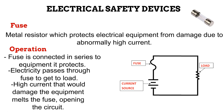Any current high enough to damage the equipment would melt the fuse. If the fuse melts, the closed circuit is opened. From our knowledge of basic electricity, current cannot flow in an open circuit. Thus, the high current damages the fuse; because the fuse is damaged, electrical supply to the equipment is cut off, and the high current can no longer travel to and damage the equipment.